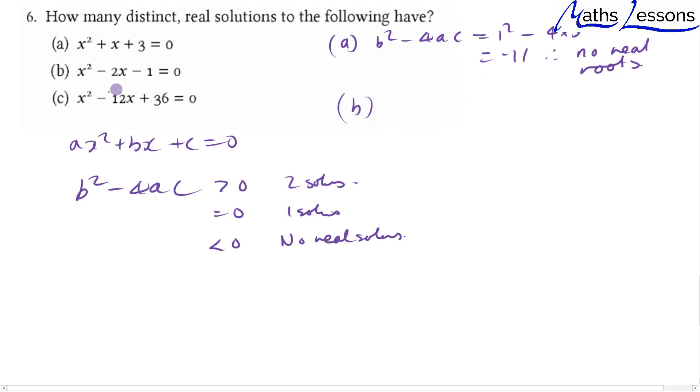b. So we've got b squared, this is going to give me 4 minus 4 times minus 1. So 2 squared is 4, minus 2 squared is 4, 4 times minus 1, and that gives us 8. So therefore we have two distinct roots because this is bigger than 0.